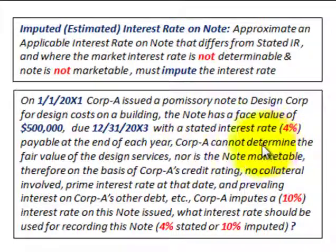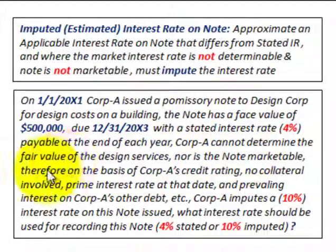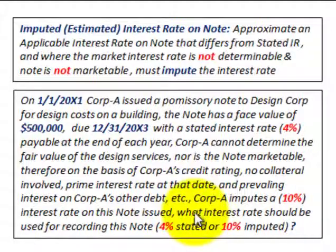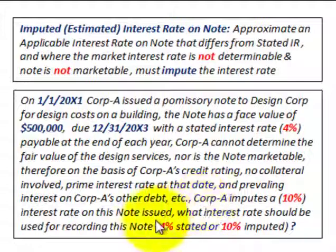Corporation A cannot determine the fair value of the design services when the note is issued in 20X1, nor is the note marketable. Therefore, based on Corporation A's credit rating, no collateral involved, the prime interest rate at that date, and the prevailing interest on Corporation A's other debt and other factors, Corporation A imputes a 10% interest rate on this note. The question is: what interest rate should be used for recording this note — the 4% stated rate or the 10% imputed rate?